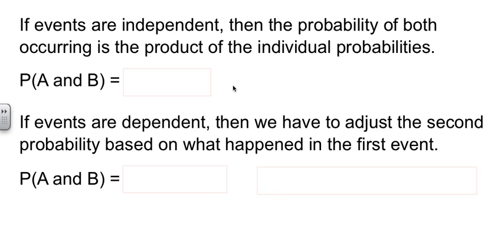Now that we know the difference between independent and dependent, let's look at how the probabilities work. If things are independent, then the probability that both things happen is just straight up multiply the two probabilities together. Probability of A and B both happening would be the probability of A times the probability of B.